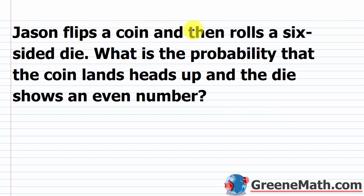So Jason flips a coin and then rolls a six-sided die. What is the probability that the coin lands heads up and the die shows an even number? When you deal with these problems, you're going to have problems that say 'and' — so some event occurs and some other event occurs. One event is flipping a coin and getting heads up, and the other is rolling a die and getting an even number — a two, four, or six. When you hear the word 'and,' you need to be thinking about multiplication.